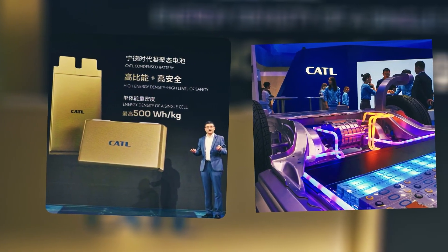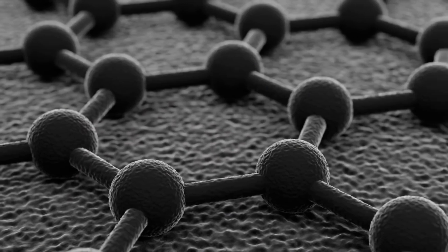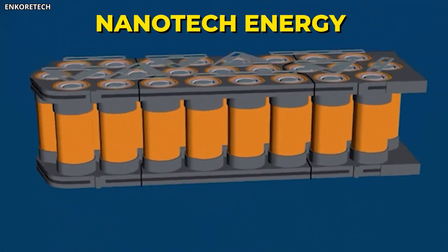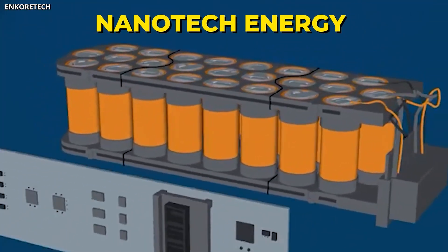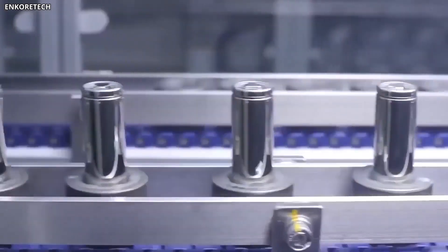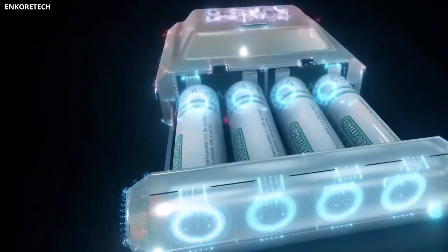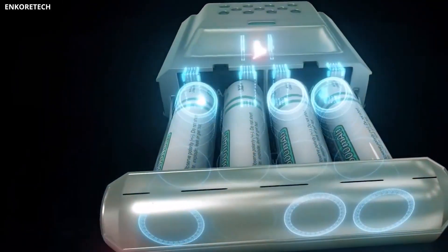CATL, the world's largest battery maker, is also working on graphene-enhanced cells, though they've been quieter about timelines. In the United States, Nanotech Energy is building what they call graphene battery gigafactories. They're not just researching anymore, they're manufacturing cells and shipping them to industry partners. Their focus is on non-flammable batteries with faster charging and longer lifespans, targeting both consumer electronics and electric vehicles.